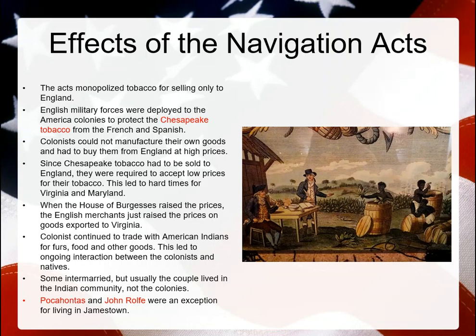When the House of Burgesses — essentially the Assembly in Virginia — raised tobacco prices, that should have helped things out. But then merchants in Great Britain said they would sell their manufactured goods at a higher rate that colonists had to buy anyway. So it didn't offset the cost. Colonists still had to buy from the British, and the British got to buy exclusively from the Americans — putting them in the driver's seat of all this commerce.